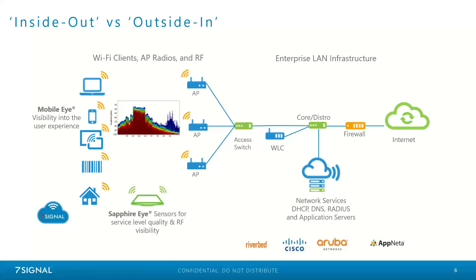With Mobileye, we can get perspective into your external home networks, which is really useful with so many working from home — it's still mission critical to stay connected to your work regardless of where you're logging in from. Additionally, we have Sapphire Eye, which are the sensors for service level quality and RF visibility. Through this combination, you gain a full perspective of what's occurring in your wireless network that you just can't find anywhere else.